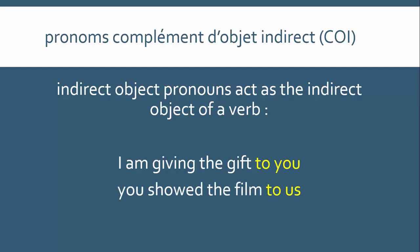Similarly, 'you showed the film to us' — the thing that was shown was the film, so it is the direct object. But we were the ones watching, and so we have an indirect link with the verb, and so we are the indirect object. And finally, 'she spoke to him.' In this case, we don't have a direct object, but there is one big clue in English as to whether something is a direct or an indirect object.